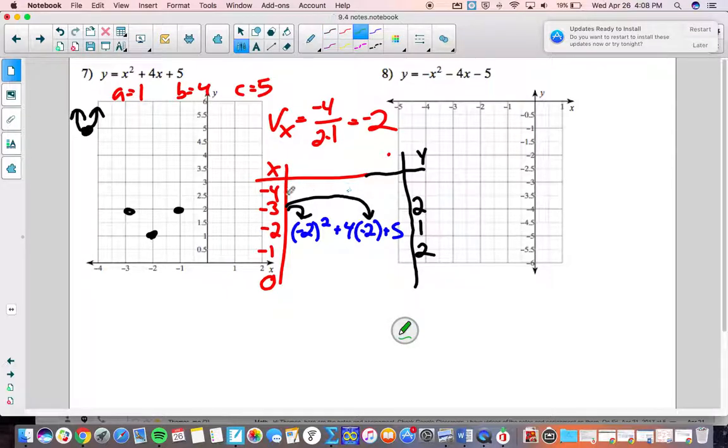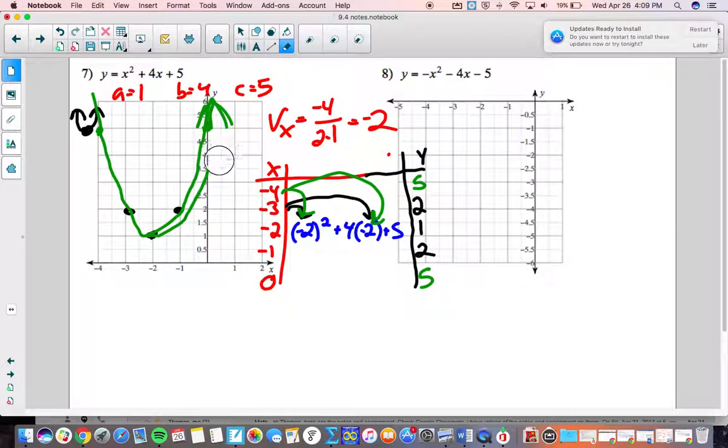And then plug in negative 4 and you'll get a 5. So plot those two points, sketch your parabola, try to hit the points. There we are.